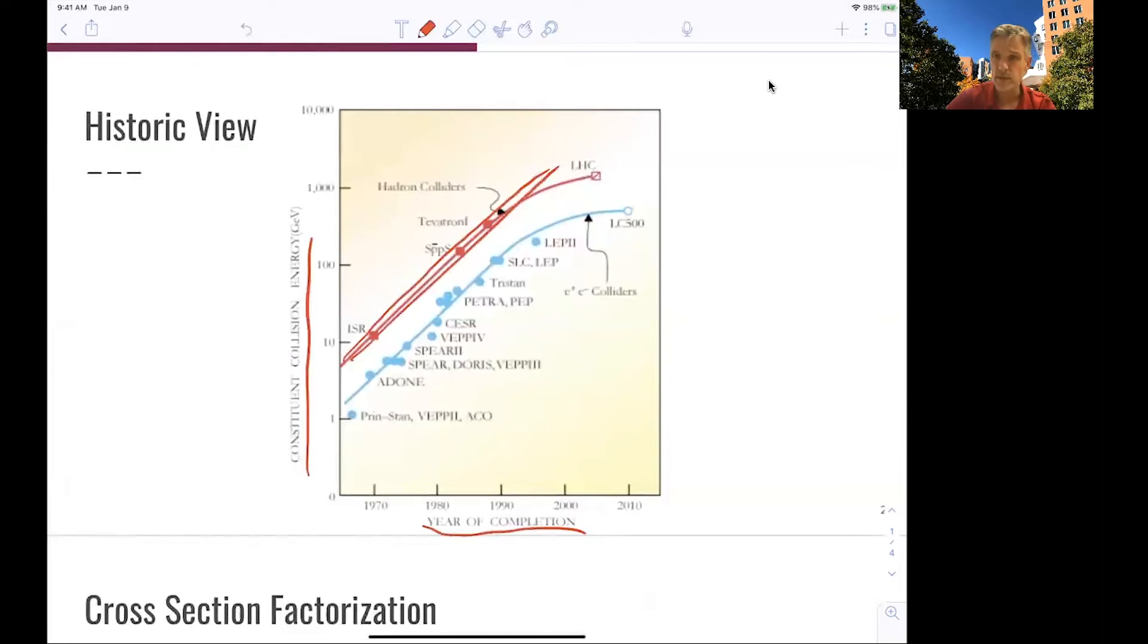that Hadron colliders here in red have an edge over lepton colliders in terms of the maximum collision energy. So the energy frontier usually is given by the Hadron colliders compared to the lepton colliders.